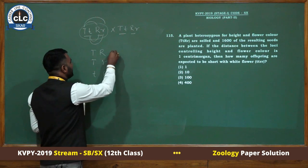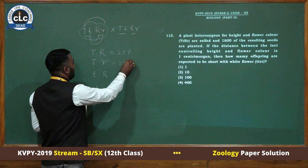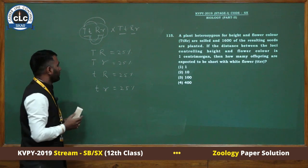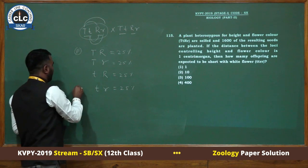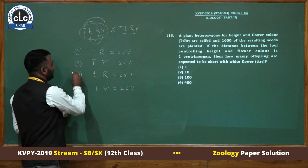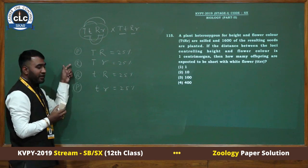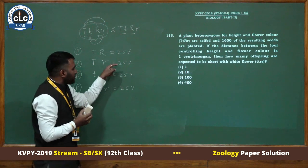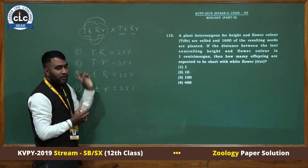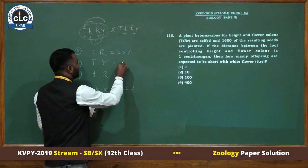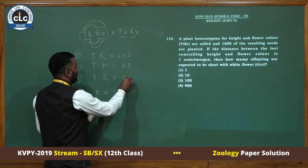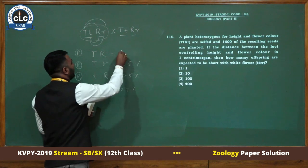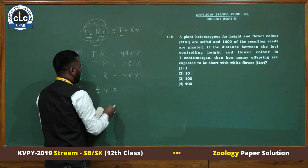Without any linkage, each gamete would be 25%. Parental types and recombinant types. We identify recombinants based on distance. The distance given is 1 centimorgan. Instead of 50%, we take 1%. This value is 0.5% and this value is 0.5%. Then capital T capital R is 49.5% and this one is 49.5%.